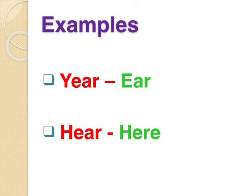The next pair is 'hear' and 'here'. The first — H-E-A-R — 'hear' means sunna. And the second — 'here' means yahaan. So this is also an example of a homophone.